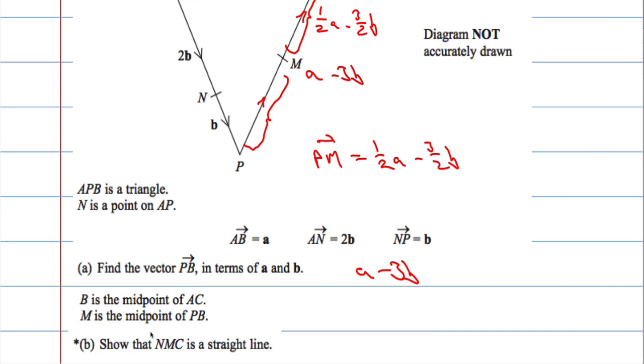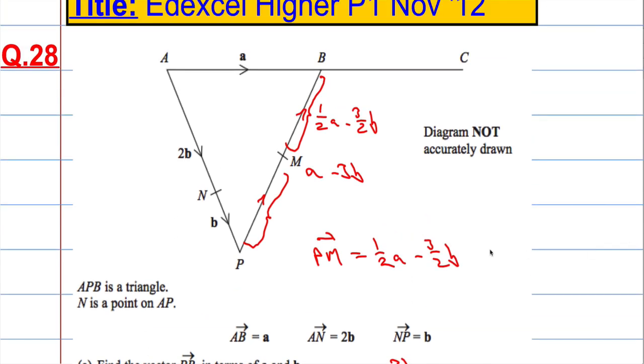So we're asked to show that N, M, C is a straight line. So in other words, I need to show that if I take a line from here to here, N, M, C, we get a straight line.